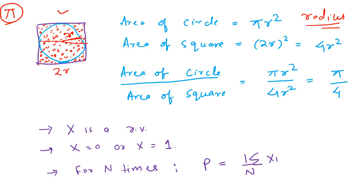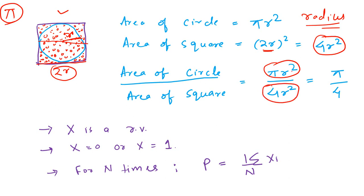The length of each side of this square is 2r. So the area of the square is the square of its sides, which is the square of 2r — because the length of each side is 2r — which is nothing but 4r squared. So if I ask you what is the ratio of the area of the circle to the area of the square, we can easily get it. Area of circle is pi r squared, and area of the square is 4r squared. When you divide that, the r squared terms cancel out, and what we get is pi by 4.